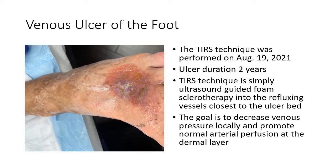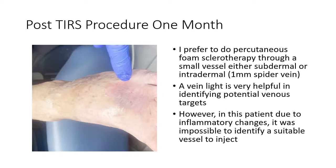The TIRS technique is simply ultrasound-guided foam sclerotherapy into the refluxing vessels closest to the ulcer bed. The goal is to decrease venous pressure locally and promote normal arterial perfusion at the dermal layer. I prefer to do percutaneous foam sclerotherapy through a small vessel — this can be a spider vein or it could be a subdermal reticular vein.